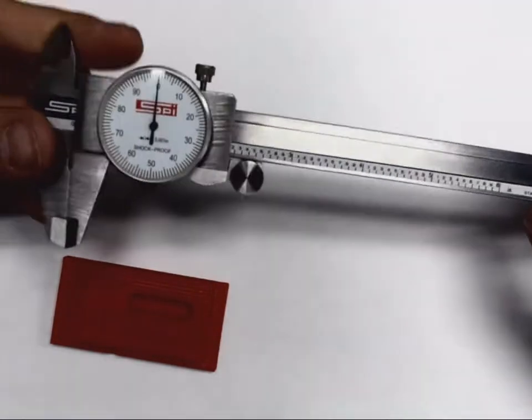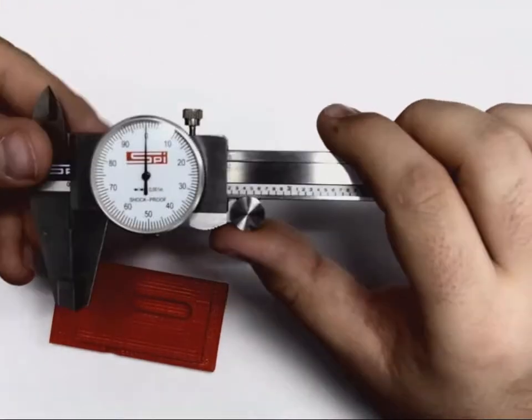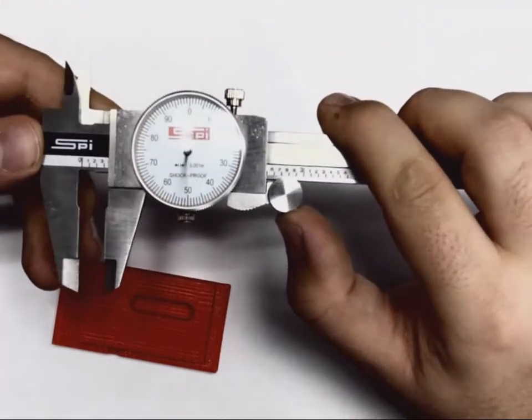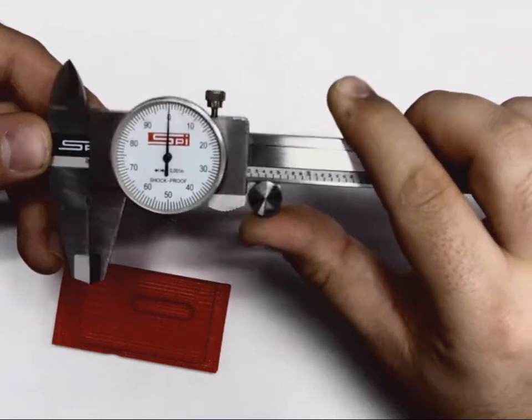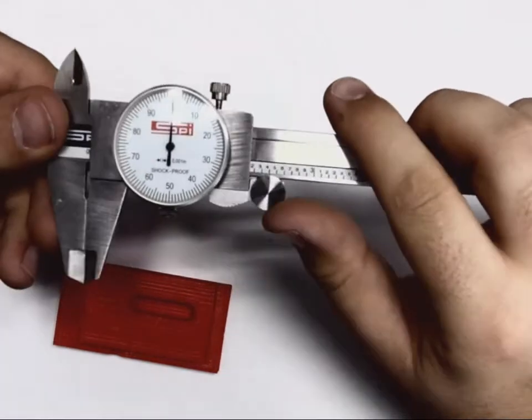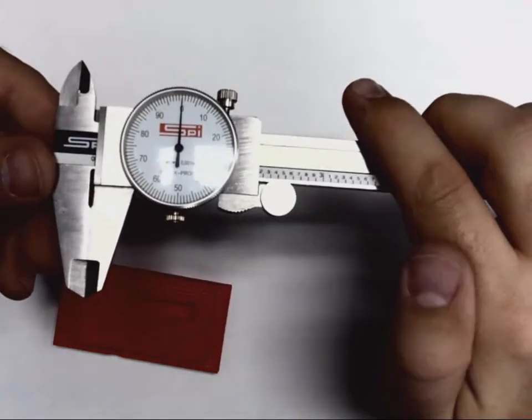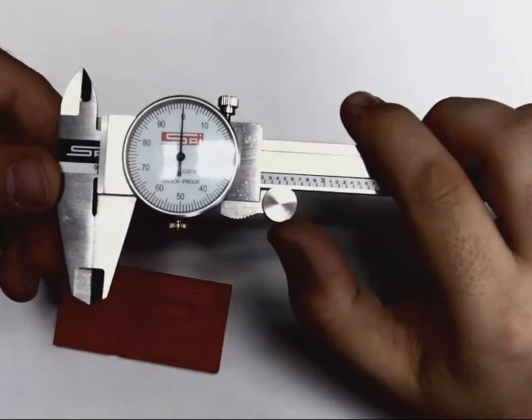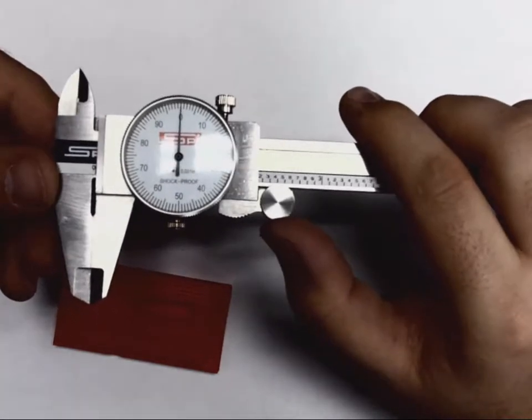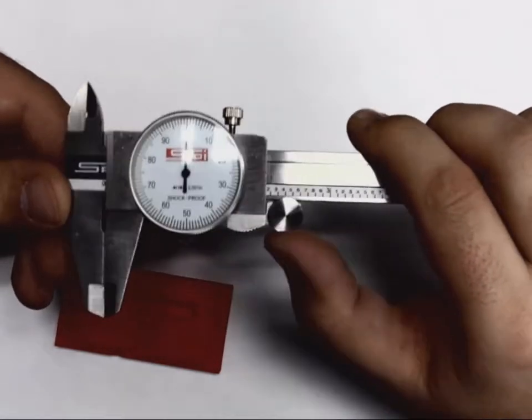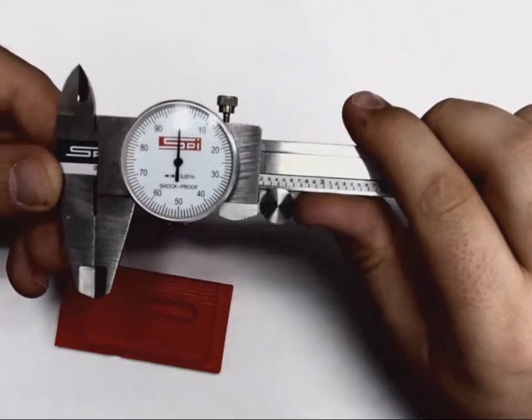Before you start any sort of measurements of the caliper, you want to make sure your caliper is closed. You don't necessarily need to have it locked. When I go to close it, I want to make sure I take my thumb off of the scroll wheel. I don't want to be squeezing them together, which can get a little bit of an inaccurate measurement. I want to just close them down so they touch.